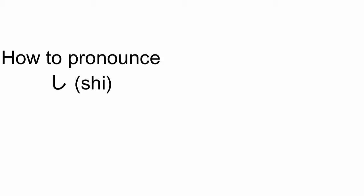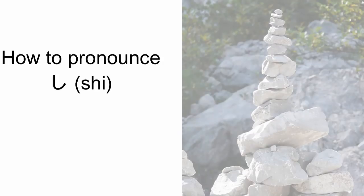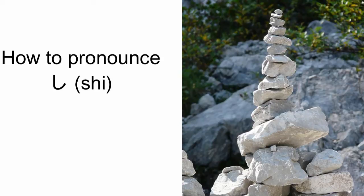If you find the pronunciation of し difficult, try いし (stone) in Japanese. When you say the S sound, just raise the tongue body and make the hissing sound.